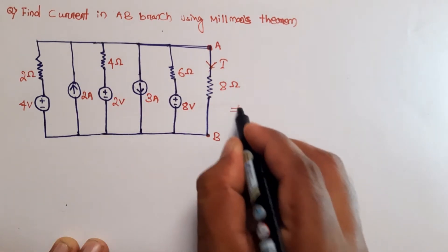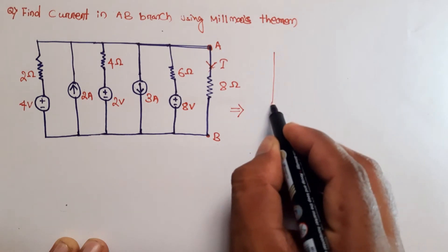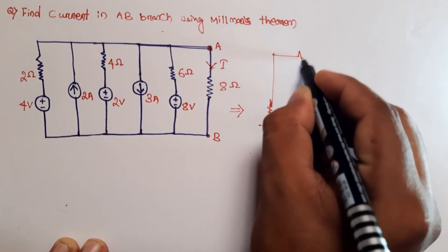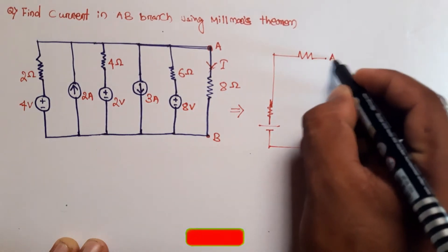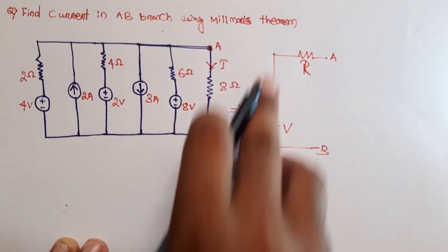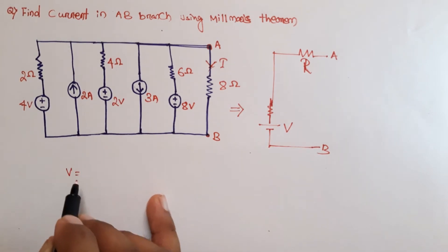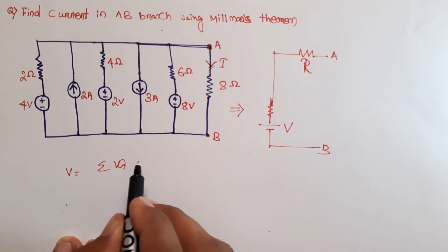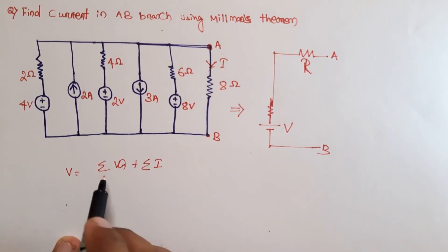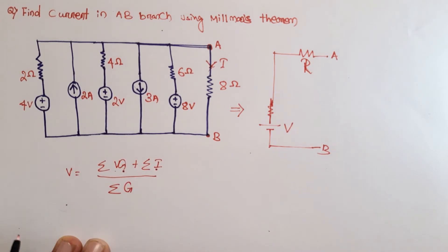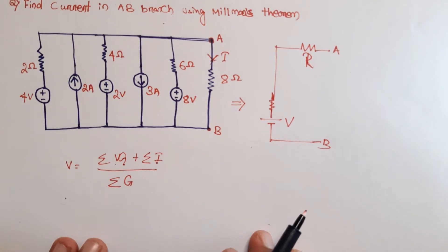According to Millman's theorem, that circuit can be converted into a single voltage source V with series resistance R. For finding this voltage, we apply Millman's formula: V equals the summation of V times G plus the summation of I — where I represents current sources — divided by the summation of G. That is the formula for finding the Millman's voltage.